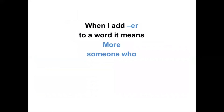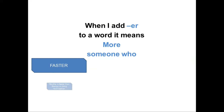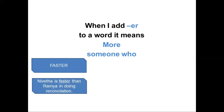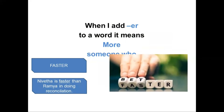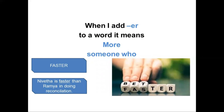When we add 'er' at the end of a base word, it creates a comparative sentence or indicates someone who does a particular work. For example, 'faster' — Niveta is faster than Ramya in doing reconciliation. Here, you are comparing Niveta with Ramya, so it creates a comparative sentence.